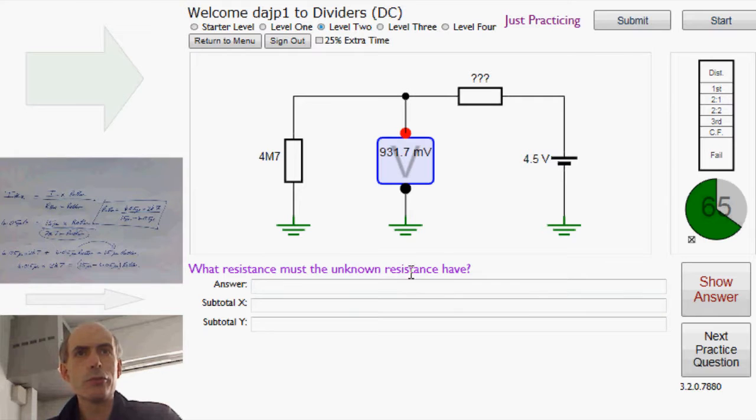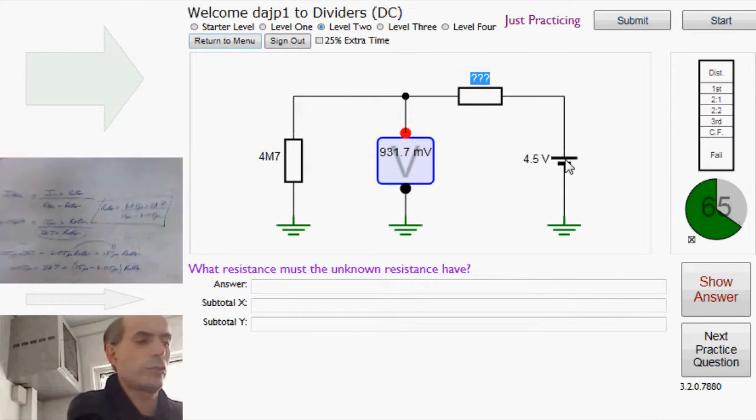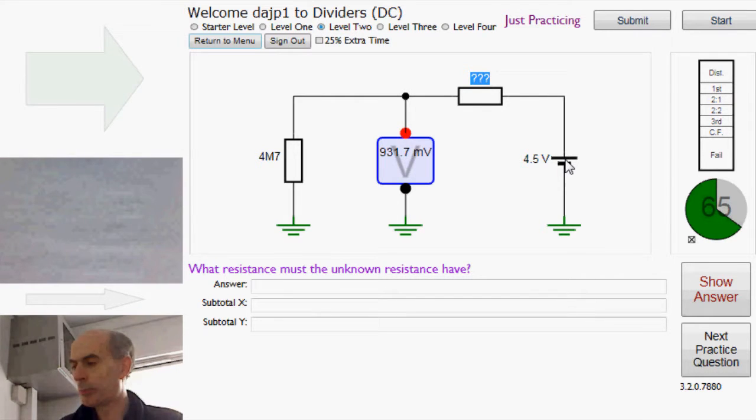What resistance must the unknown resistance have? OK, here we have an unknown resistance, and this is a potential divider. Again, it might be clearer if we draw the circuit out, so it looked a bit more like a conventional voltage divider.